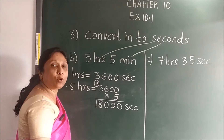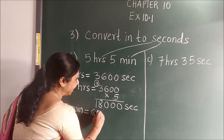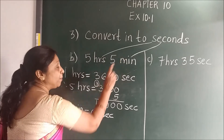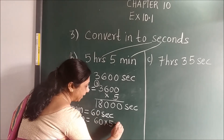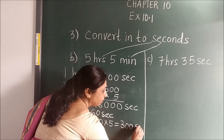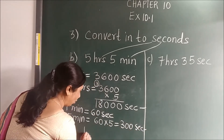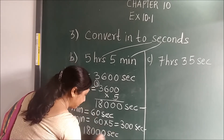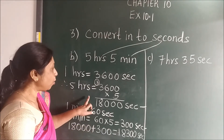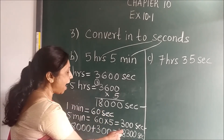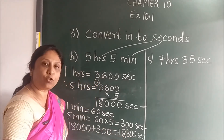Now 5 minutes you have to convert into seconds. 1 minute is equal to 60 seconds. So 5 minutes will equal 60 multiplied by 5, giving 300 seconds. Now you will add both results. 18,000 seconds plus 300 seconds. When you add, you will get the answer: 18,300 seconds.